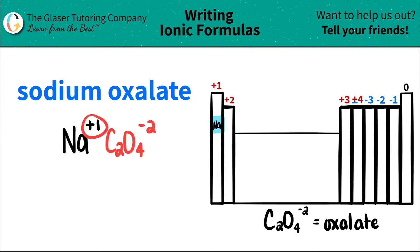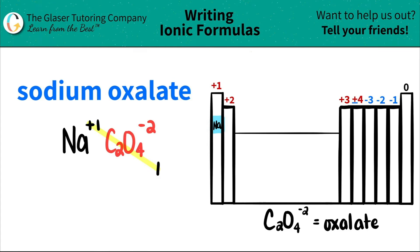Now we have both components and both charges. So all we do is this little trick where we crisscross the charges to say how many of each component I need. This plus one crisscrosses down to the oxalate telling me that I only need one oxalate. And then this negative two crisscrosses down telling me that I need two of the sodiums. When you do your crisscrossing, don't worry about the charges — you can scratch them out and just look at the numbers.